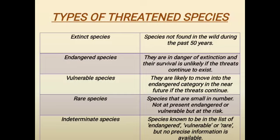Four: rare species — small in number, not presently endangered or vulnerable but at risk; examples: snow leopard, geese, golden langur, Malabar giant squirrel, etc. Five: indeterminate species — species known to be in the list of endangered, vulnerable, or rare but for which no precise information is available.